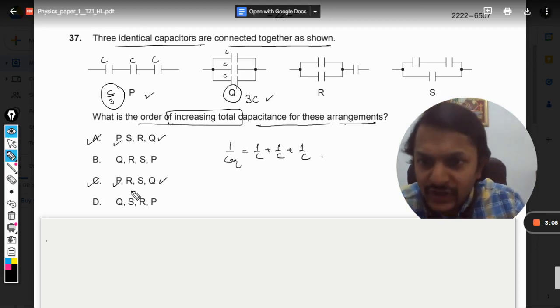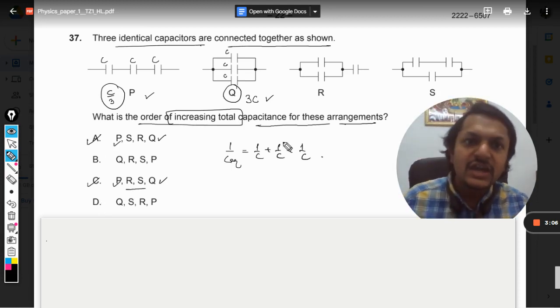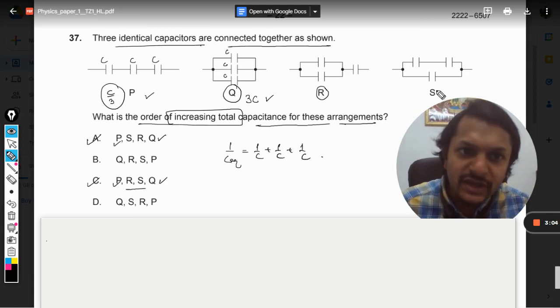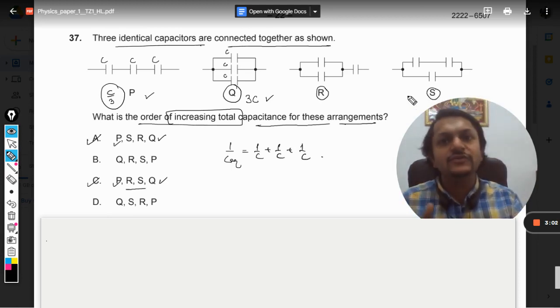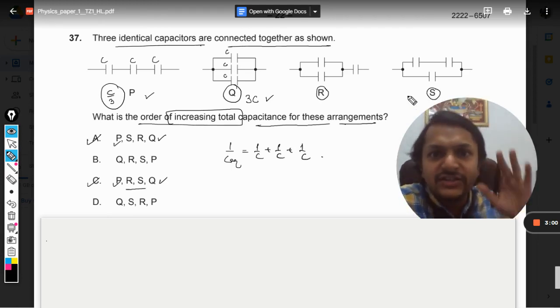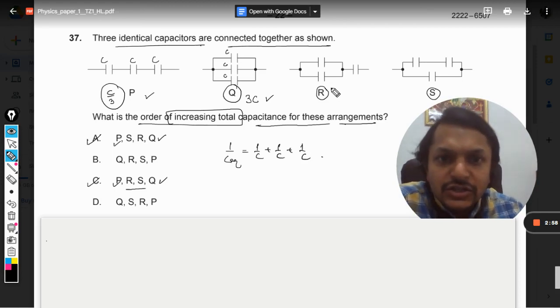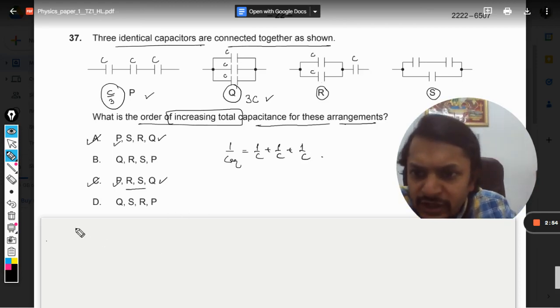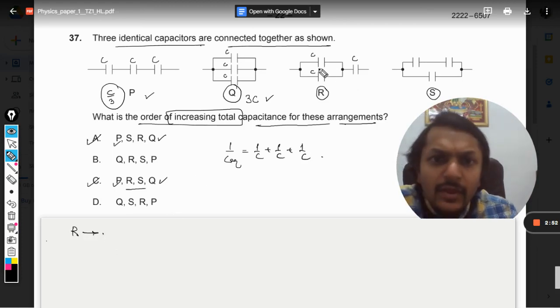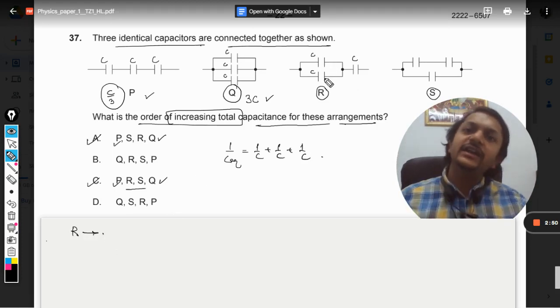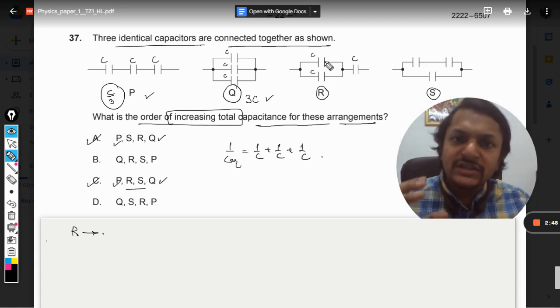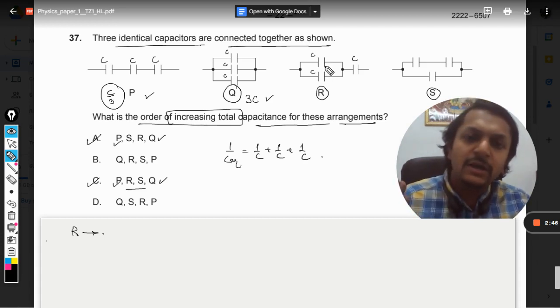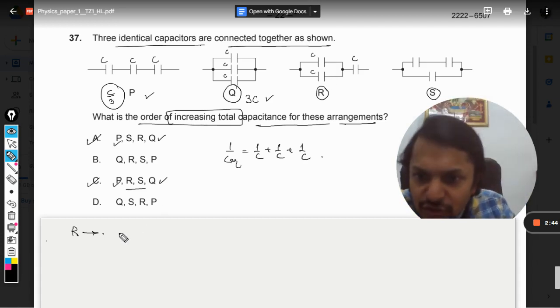But now we are left only for R and S. For R and S we have to calculate individually. There is no other method. So first of all, I am going for R. Both of these C are in parallel, so what we do is we add them. So it will become 2C.